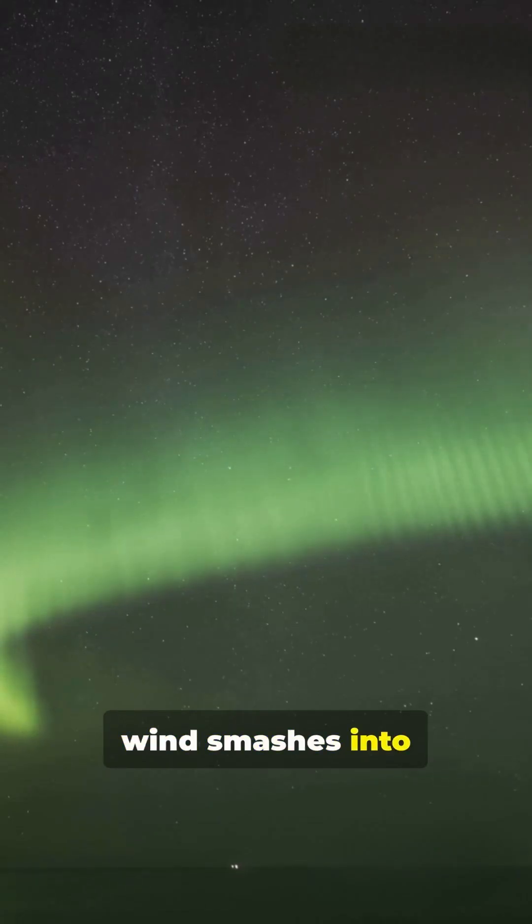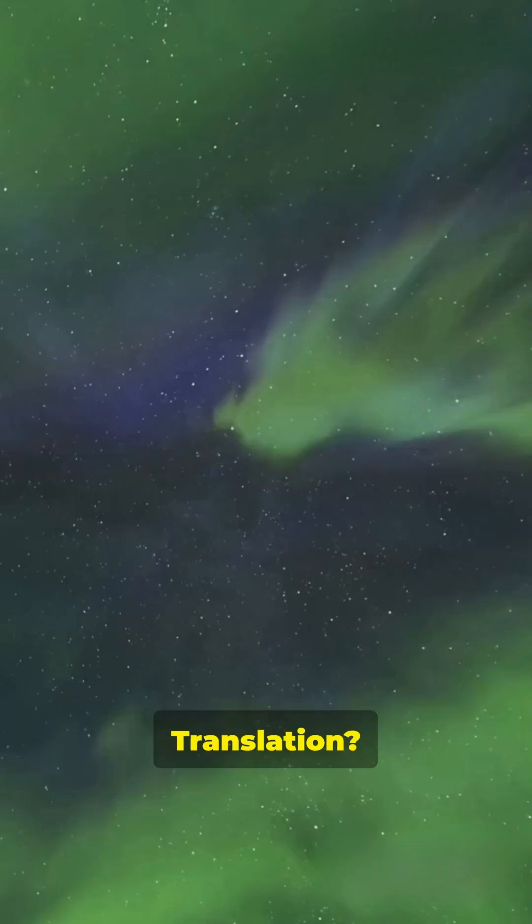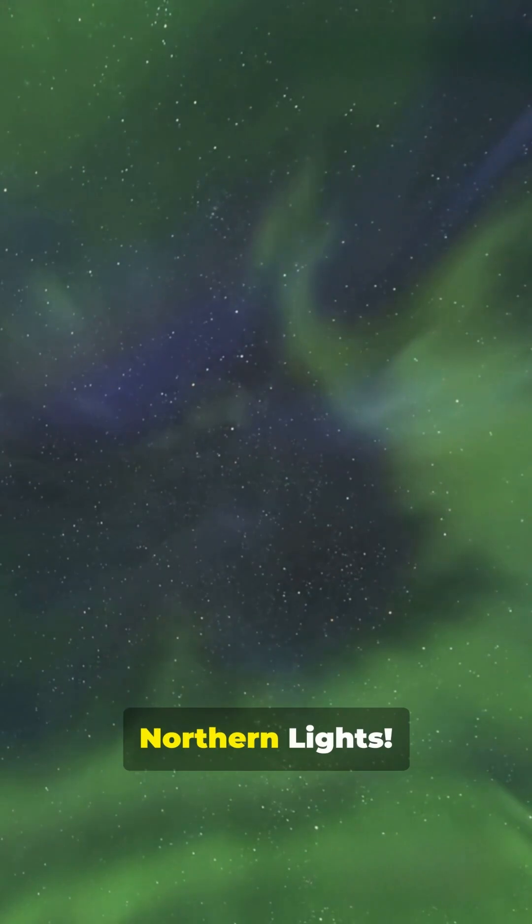When this solar wind smashes into Earth's magnetic field, it can trigger geomagnetic storms. Translation: supercharged northern lights.